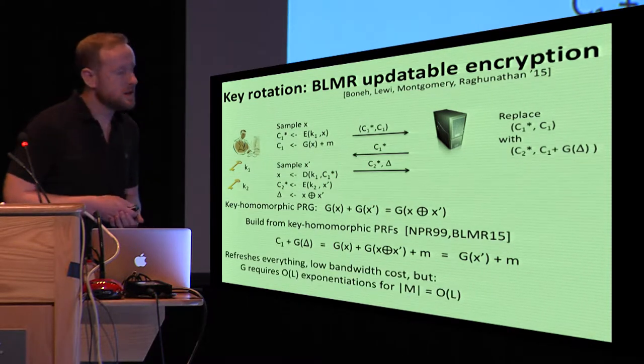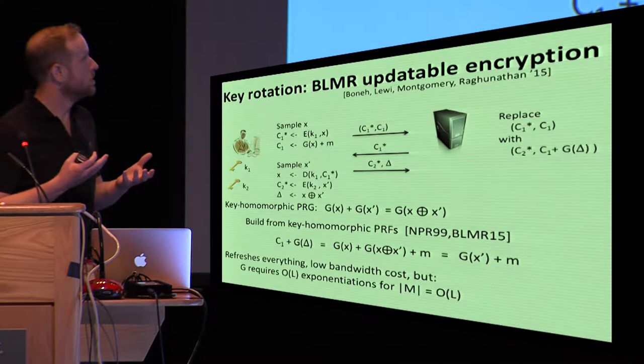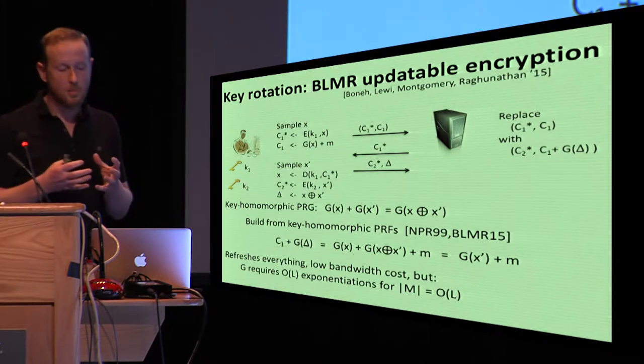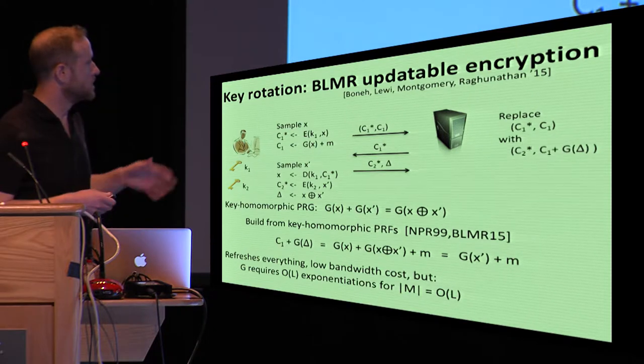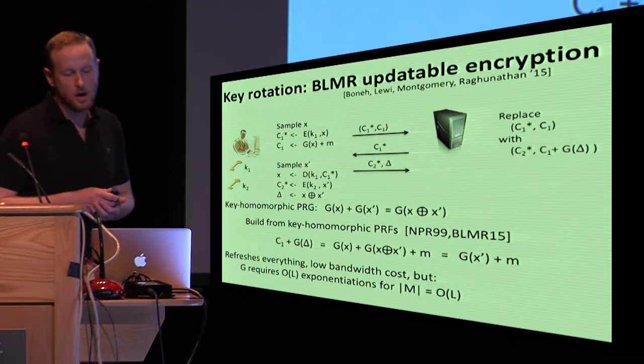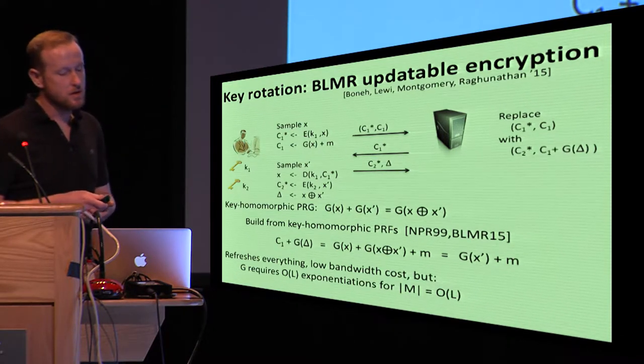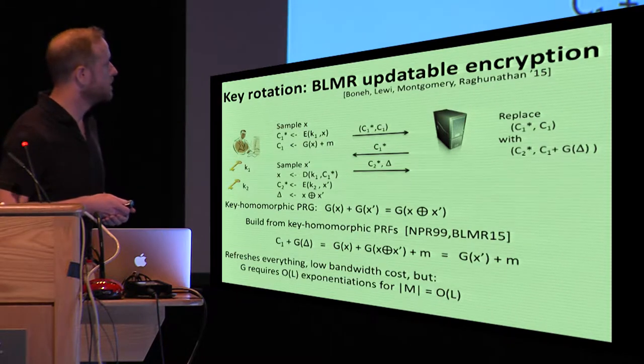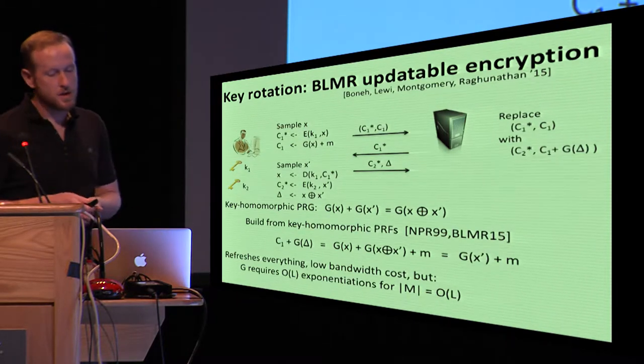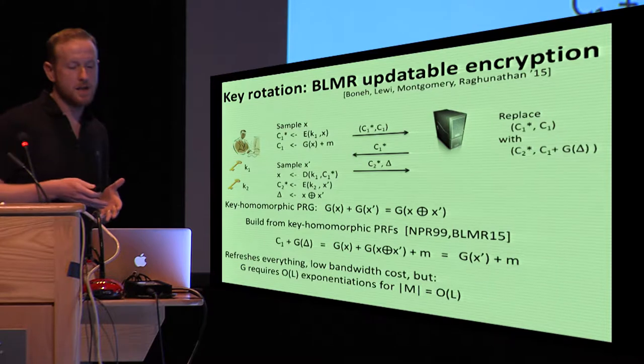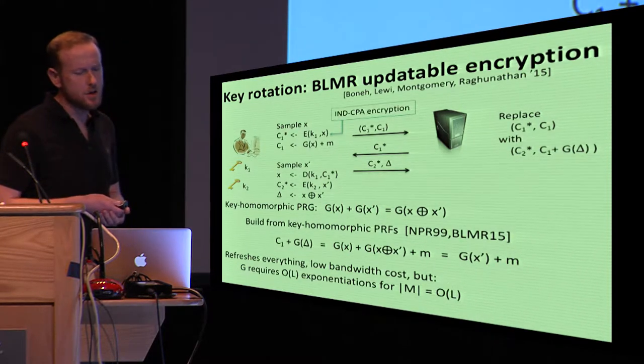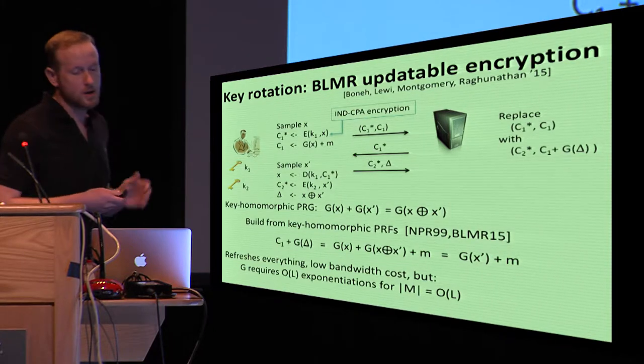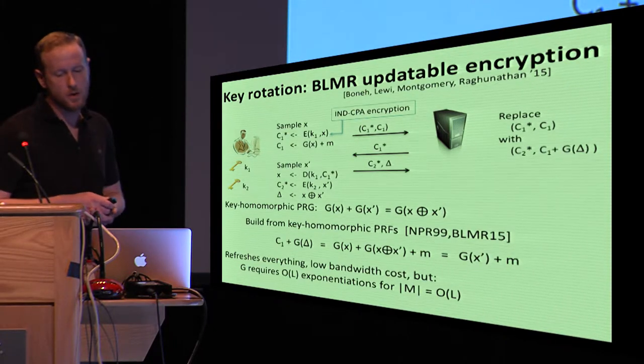So that's nice, it refreshes everything, it has low bandwidth cost because C1-star and C2-star and delta are compact, but it requires quite a number of exponentiations because you're using asymmetric crypto mechanisms underneath these key homomorphic PRG. I should mention also that they focus primarily on IND-CPA style encryption, so they weren't worried about authentication or ciphertext. They were just using IND-CPA encryption for this, this will be important in a few minutes.